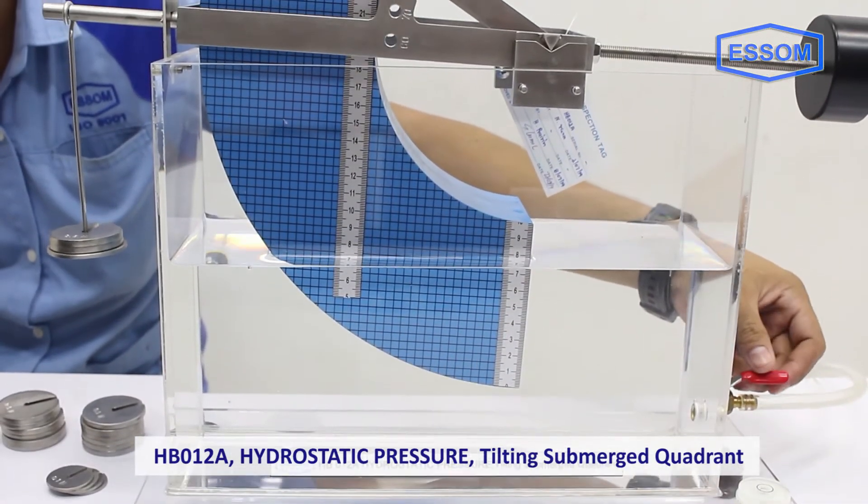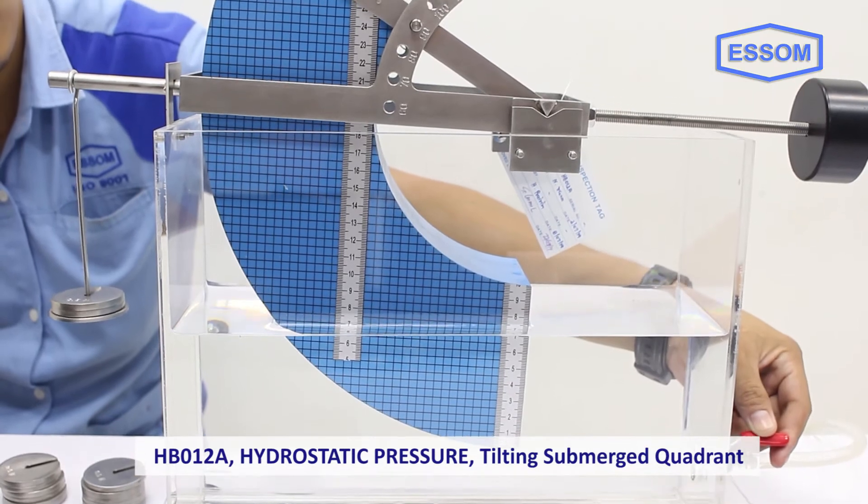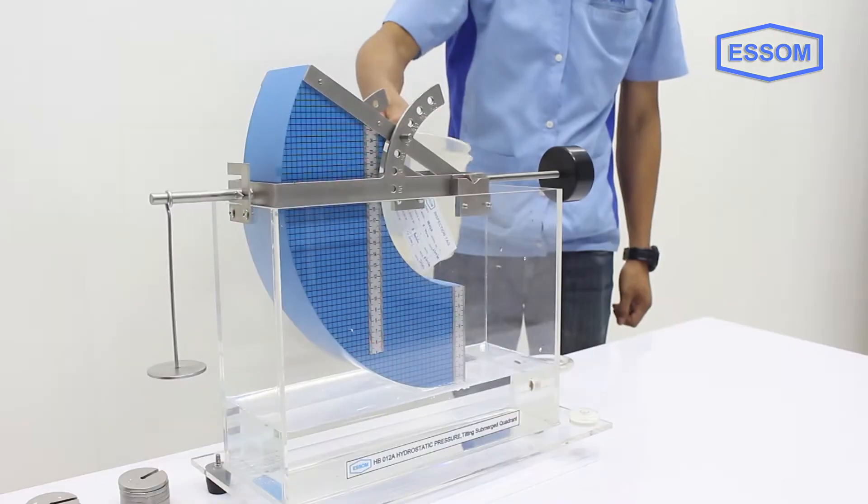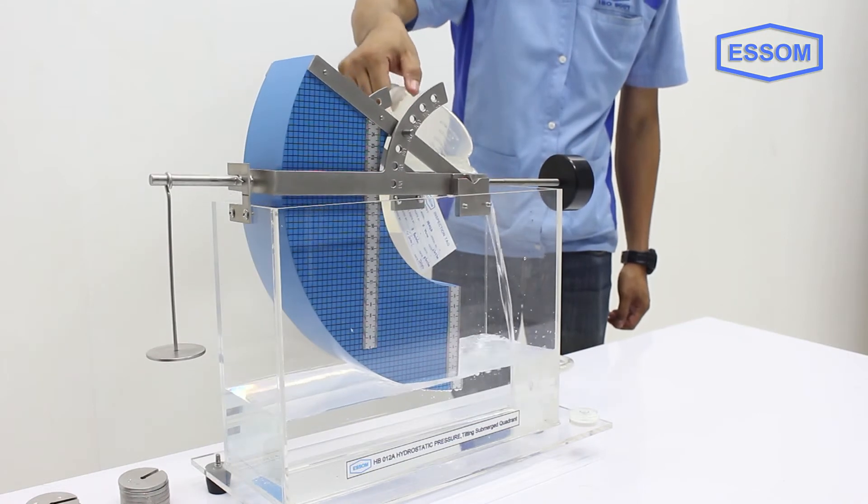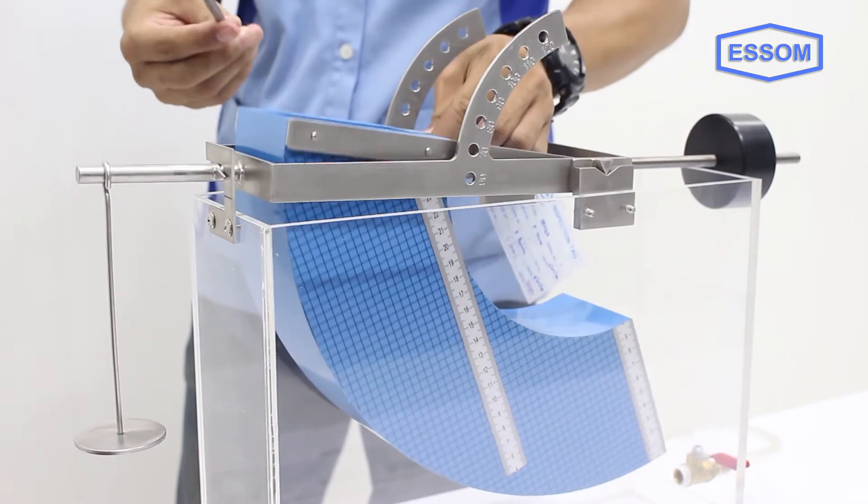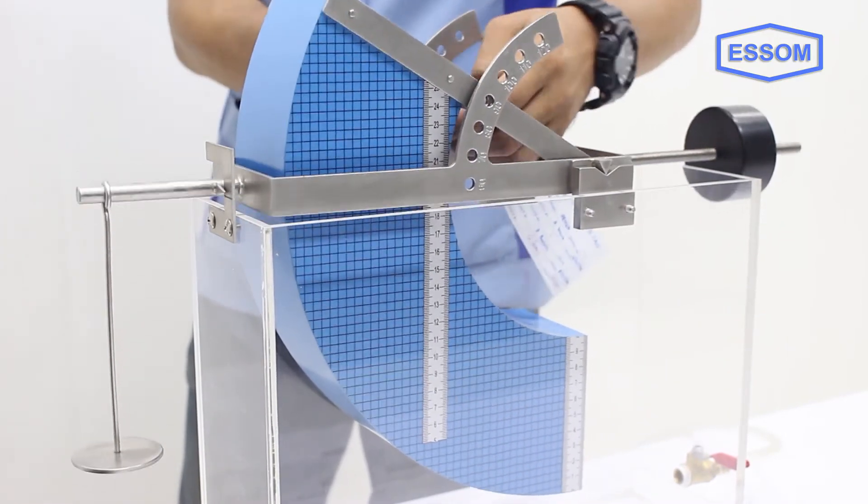HP 012, a hydrostatic pressure tilting submerged quadrant. This equipment allows the moment caused by a fluid thrust on a wholly or partially submerged plane surface to be measured directly. This surface can be tilted. A PVC quadrant is hinged on a shaft pivoted on knife edges which coincide with the quadrant center.